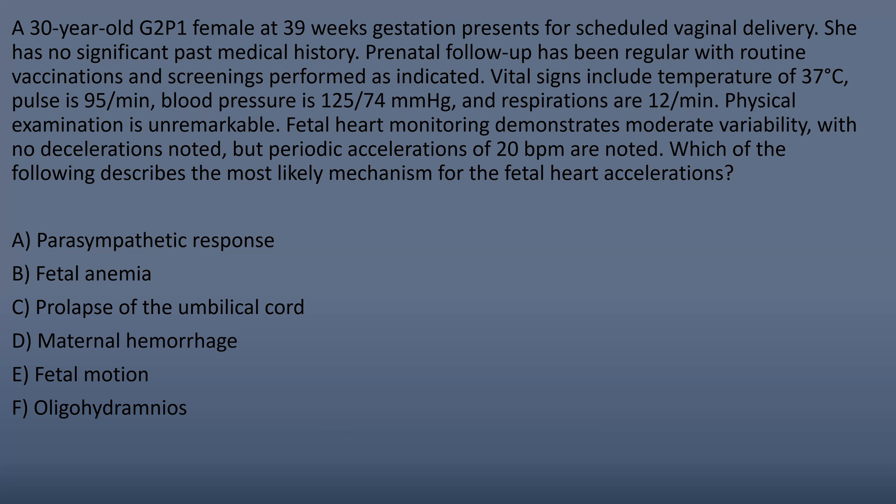The answer choices are: parasympathetic response, fetal anemia, prolapse of the umbilical cord, maternal hemorrhage, fetal motion, or oligohydramnios. I'll pause here briefly if you want to walk through this on your own.